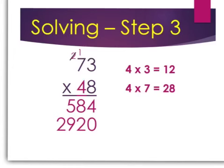Now the final step is to add those two numbers together, 584 and 2920. 4 plus 0 is 4. 8 plus 2 is 10, carry the 1. 9 plus 5 plus 1 is 15, carry the 1. And 1 plus 2 is 3. So 73 times 48 is 3,504.